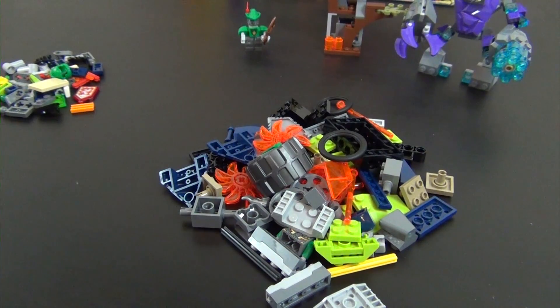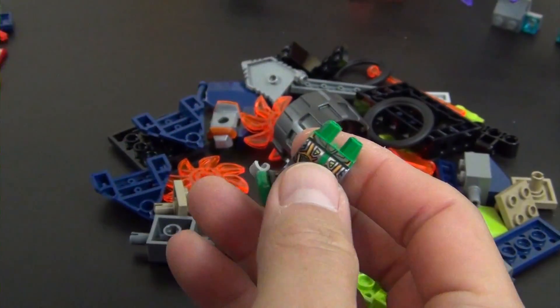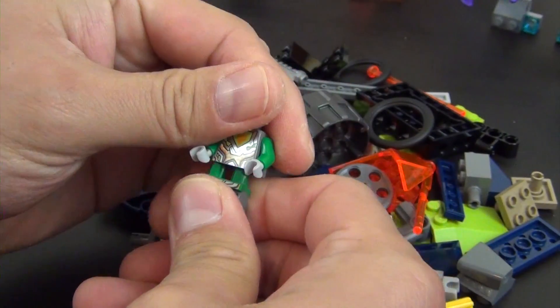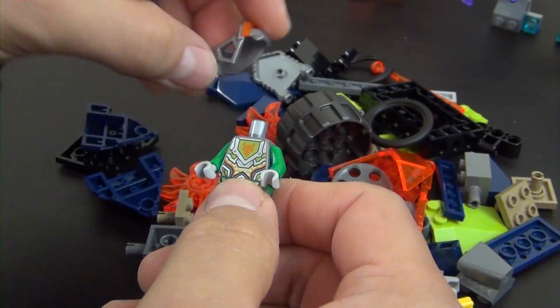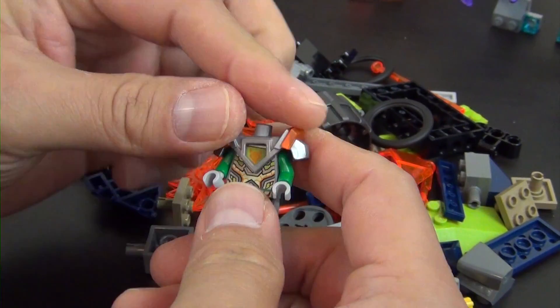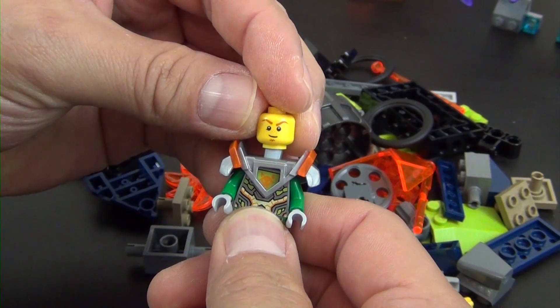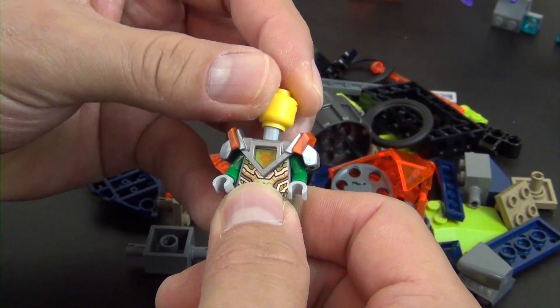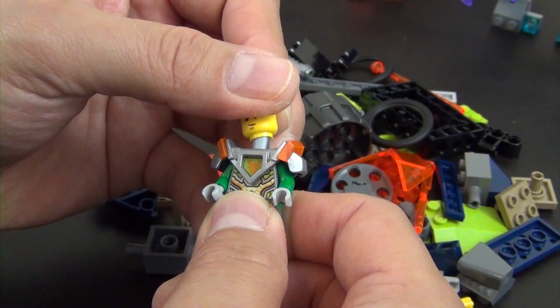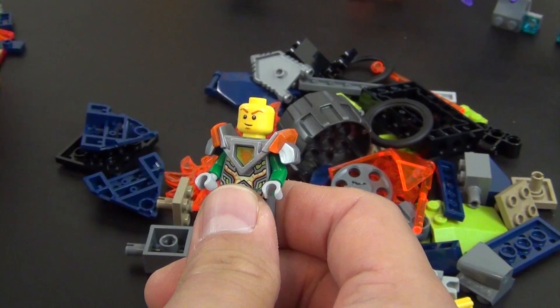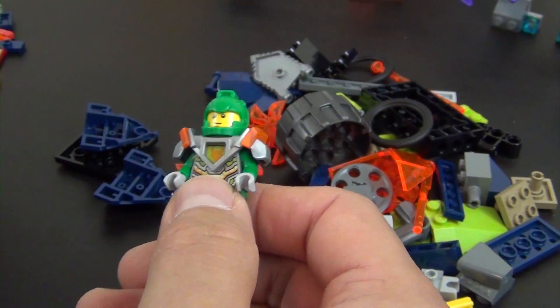Okay, we have all of our bag two parts dumped out. We have the next minifigure, is Aaron. So he's got his green outfit on. Put his shoulder armor on there. He has his double printed face, which is kind of the angry grin and then the big cheesy happy smile.